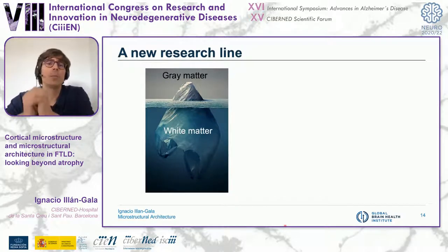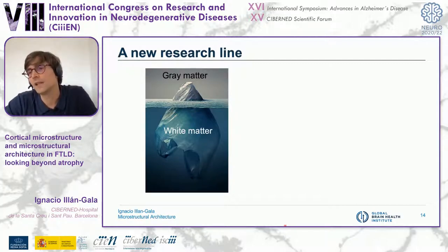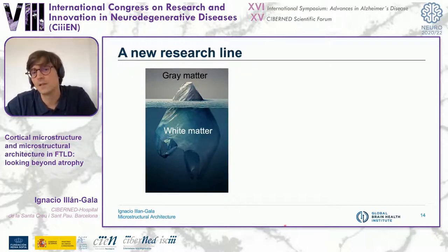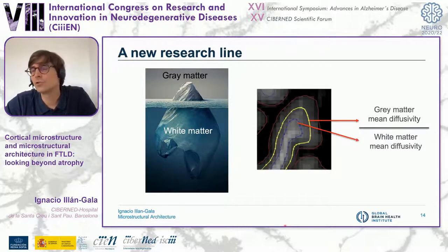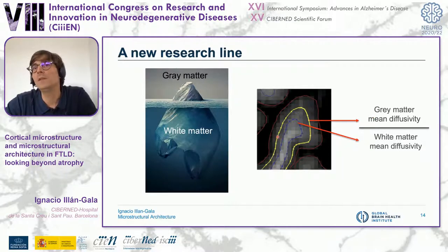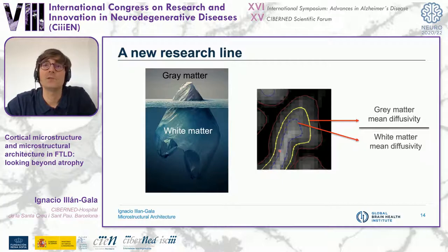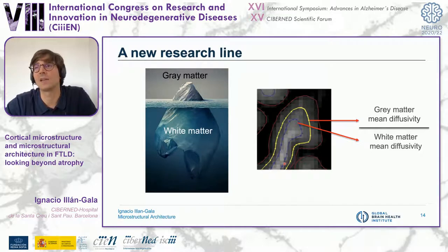The relationship between cortical and subcortical white matter components can be understood as a qualitative measure of neurodegeneration reflecting the architecture of neurodegeneration. That's how I came up with the microstructural architecture ratio. We sample mean diffusivity at the central ribbon — cortical mean diffusivity — and combine this with mean diffusivity at the gray matter–white matter interface, the blue boundary. Combining these two metrics per vertex, we compute this ratio.